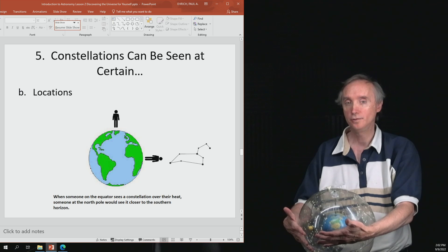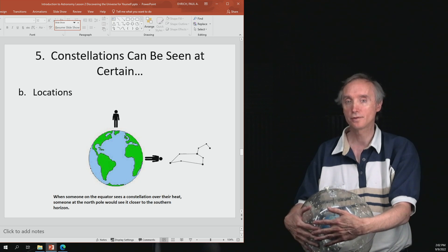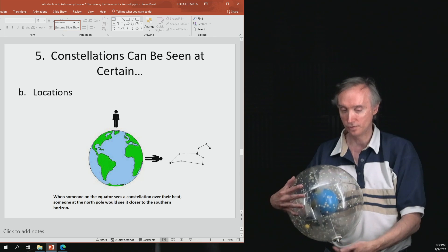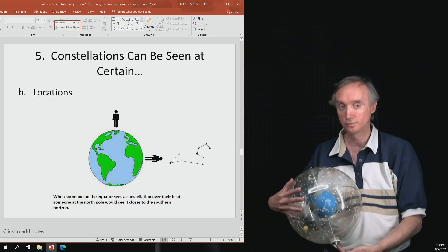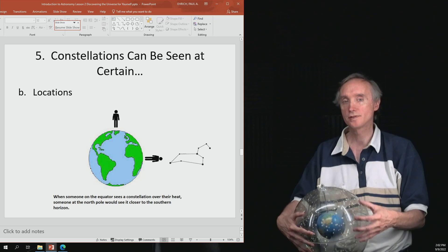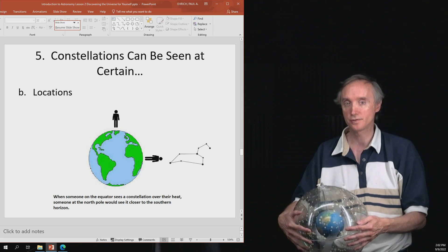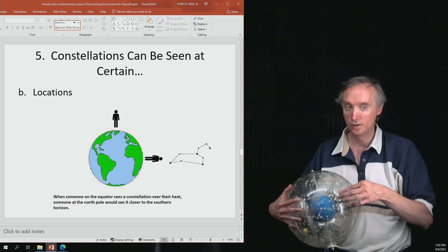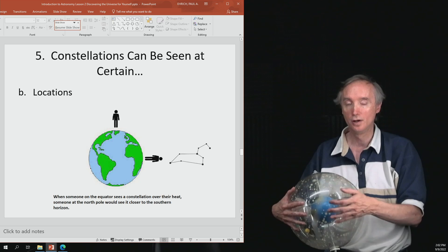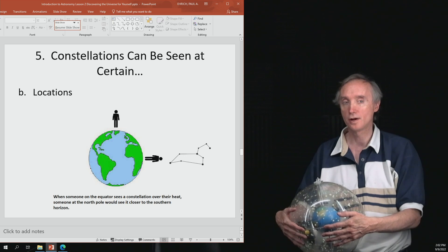So where would you have to be? You'd have to be in the southern hemisphere before you could see one of those southern constellations that are very close to the South Pole. Now, even here in Missouri, we can see a few constellations that are below the celestial equator, but not many of them. They are very low on the southern horizon.